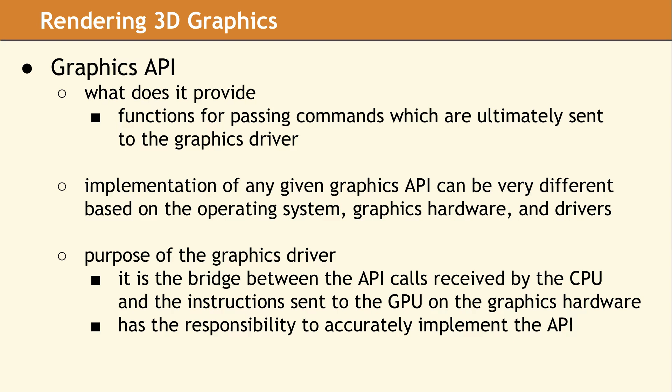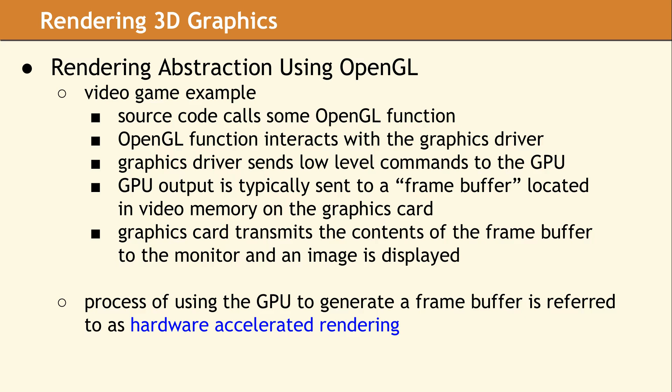This typically happens when the vendor does not provide drivers for a particular platform, or the quality of the vendor-supplied driver is not sufficient. Consider a software application which is using the OpenGL API to render graphics. The expectation is that the developer can be on any operating system using any graphics hardware, and everything will still work. This is true as long as the Graphics Driver meets the specifications of the OpenGL API. It is the responsibility of the Graphics Driver designer to provide a uniform API, independent of the underlying graphics hardware and operating system.